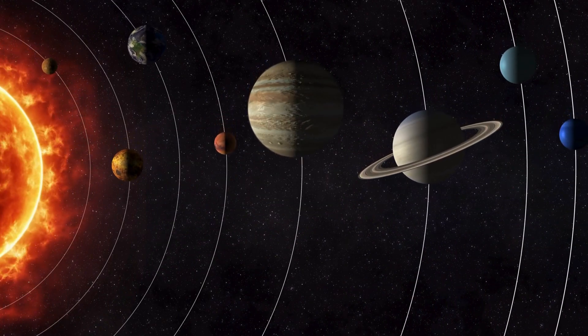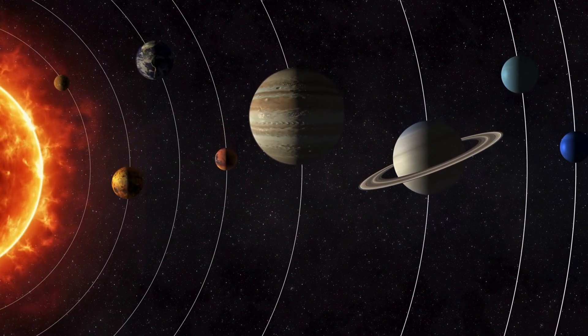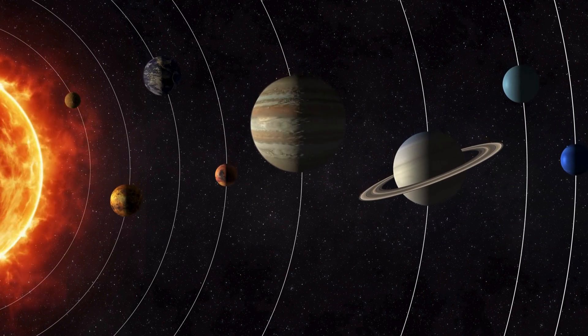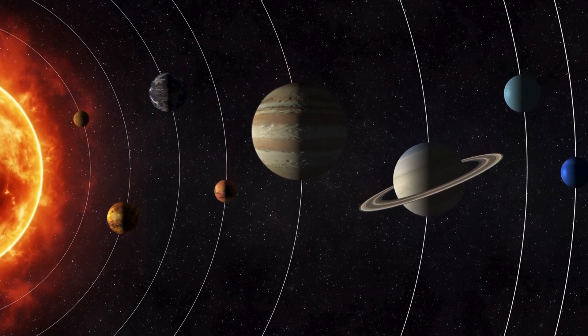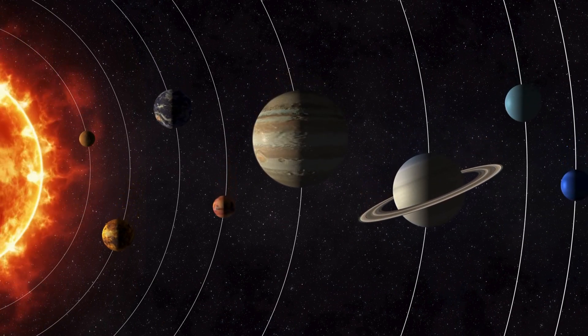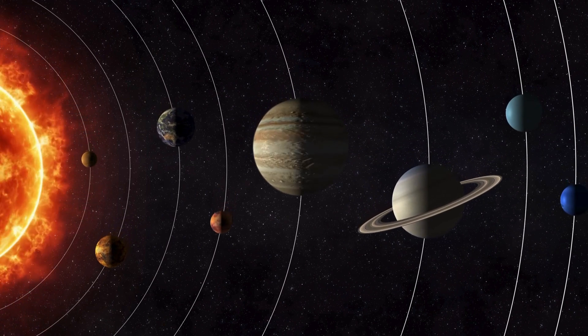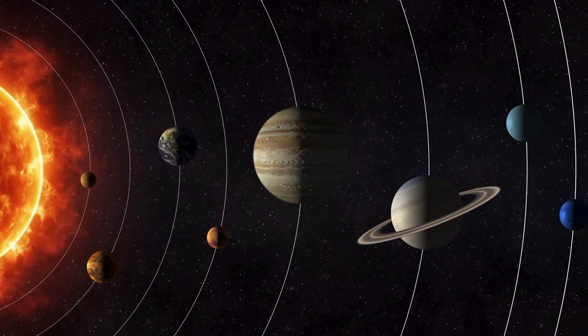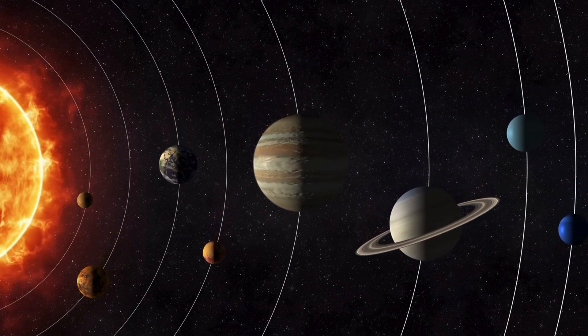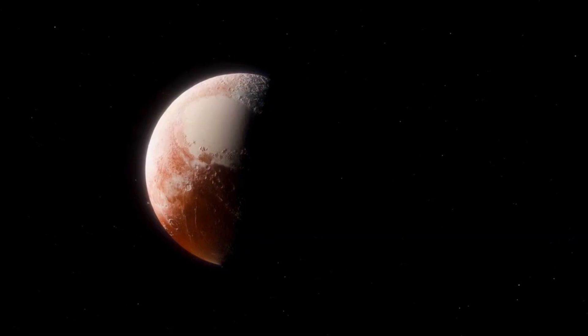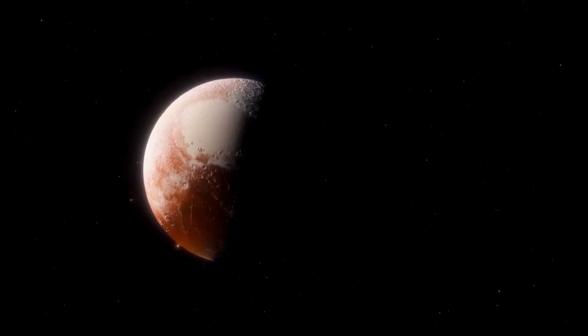Mercury is the closest to the sun. Venus is the hottest one. Earth is the planet we call home. Mars is the red one. Jupiter's the biggest one. Saturn has a lot of rings. Uranus is blue and is the coldest planet. Neptune is the furthest from the sun. Hey, what about me? You will always be our friend, Pluto.